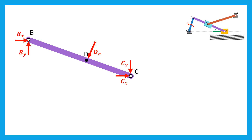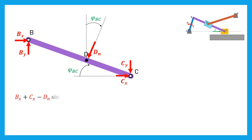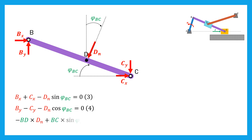The second link to be considered is the bar BDC. A bar is considered as a rigid body; thus three equilibrium equations can be written. The force DN is perpendicular to the bar, and as the bar has angle phi_BC with the horizontal direction, force DN has the same angle phi_BC but with the vertical direction. The horizontal equilibrium writes: BX plus CX minus DN·sin(phi_BC) equals zero. The vertical equilibrium writes: BY minus CY minus DN·cos(phi_BC) equals zero. The moment equilibrium about B gives: minus BD·DN plus BC·sin(phi_BC)·CX minus BC·cos(phi_BC)·CY equals zero.